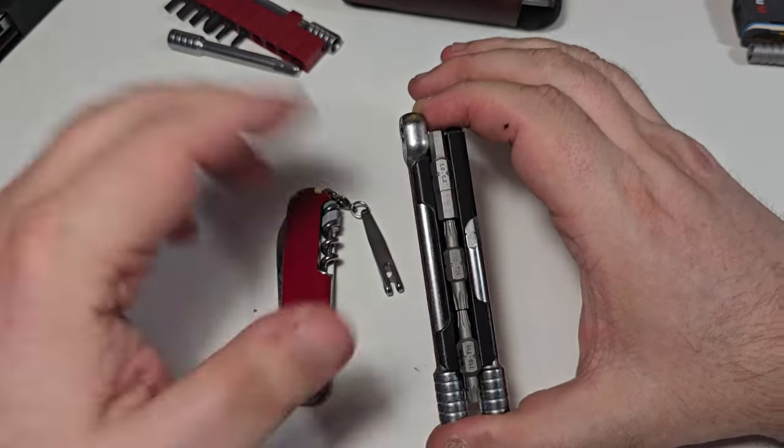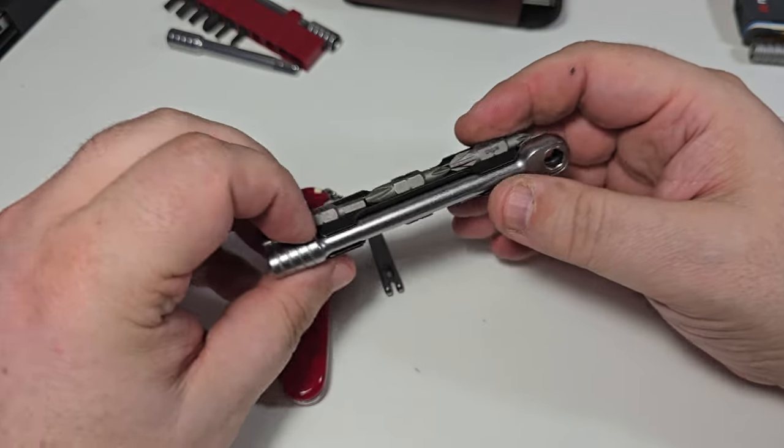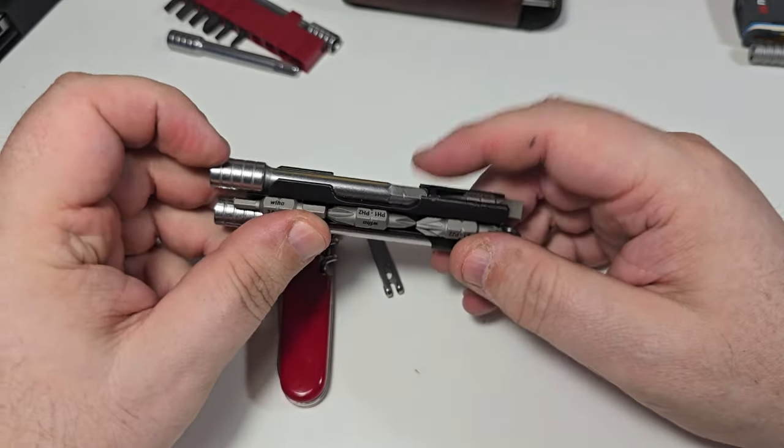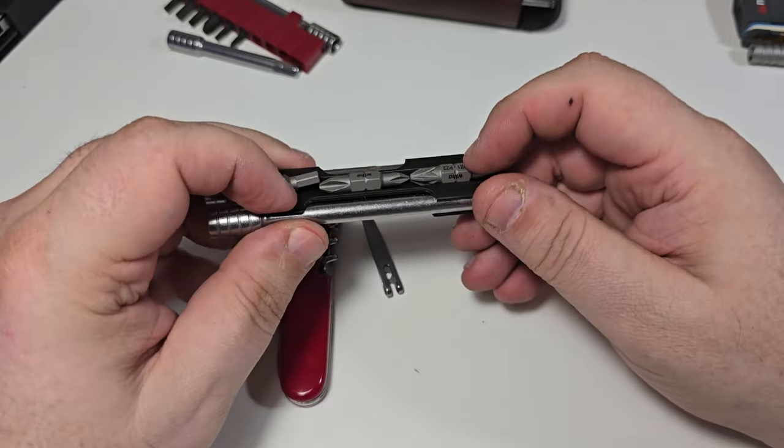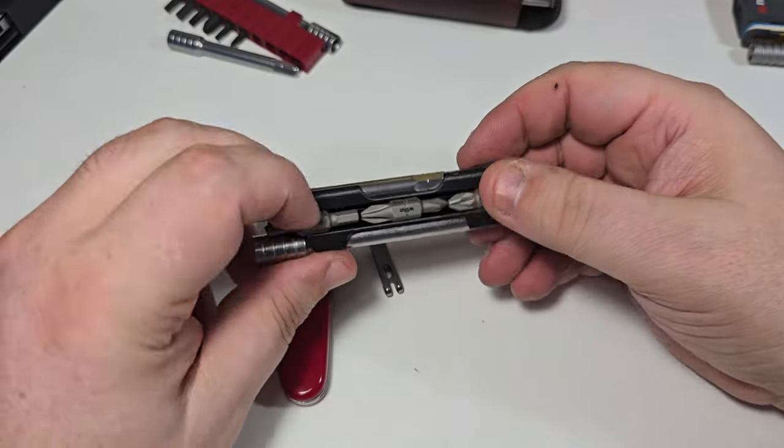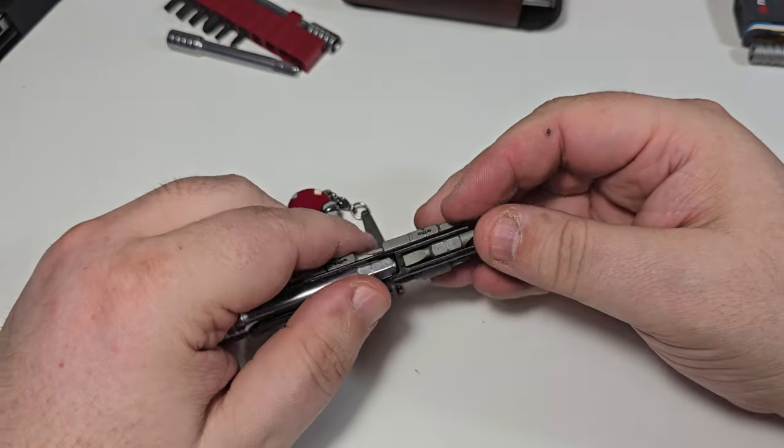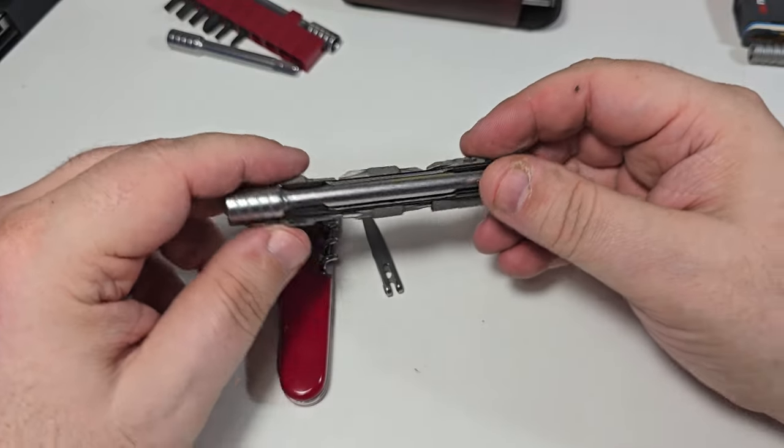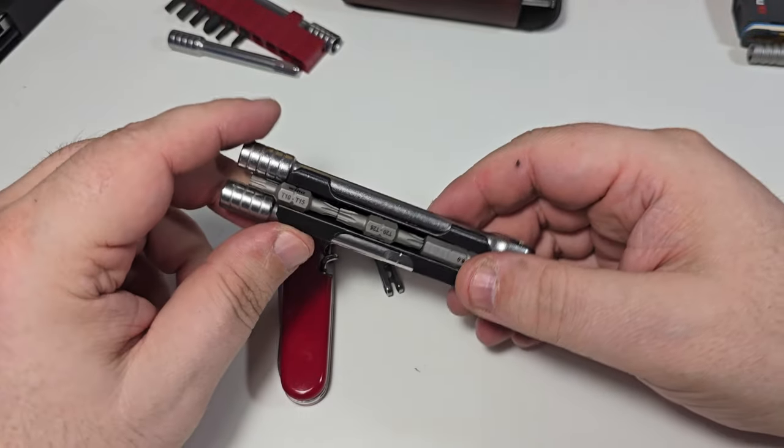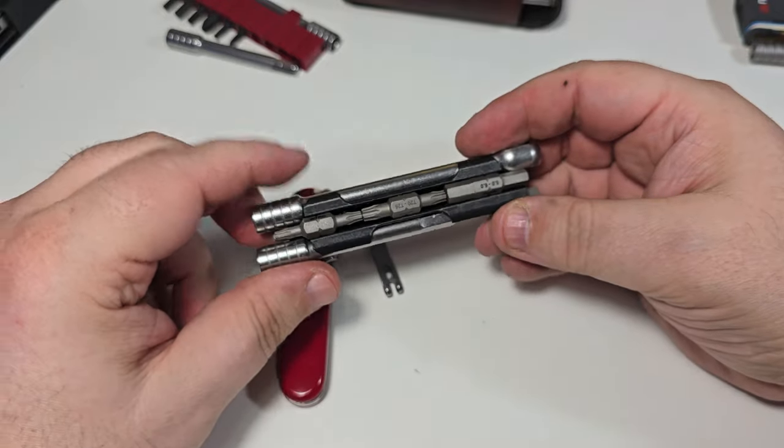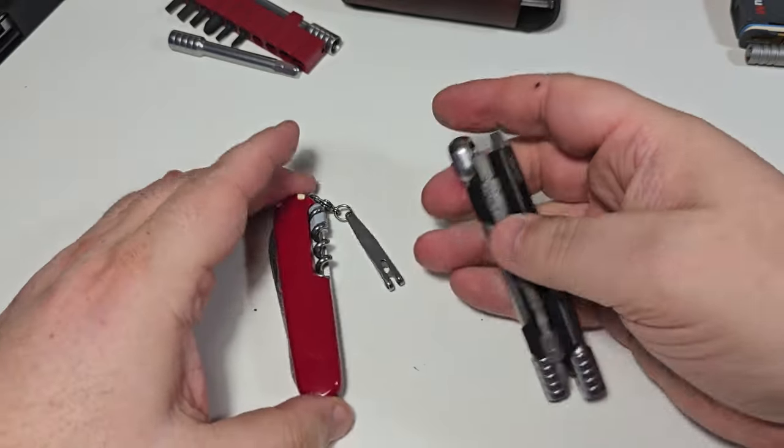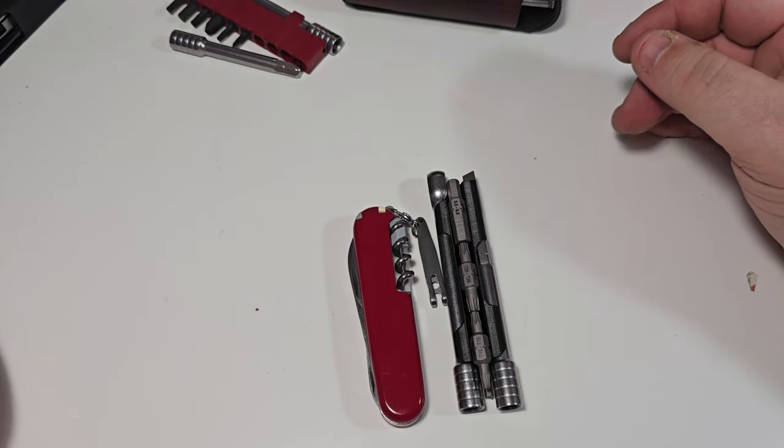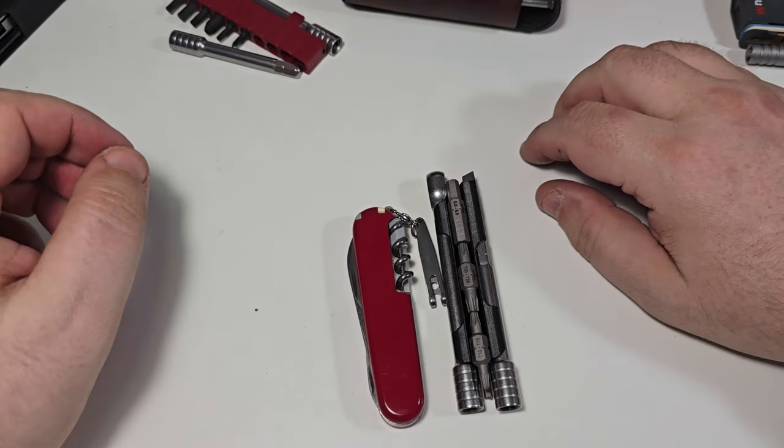Here it is, this is the SAK companion. Victorinox Swiss Army Knife companion is of the ratchet, is of the extension. Here we have seven bits which are held by magnets inside here. This one is not held by magnets. There are seven double-ended bits, which means you have 14 screwdriver heads, and you can see it's as small as possible.